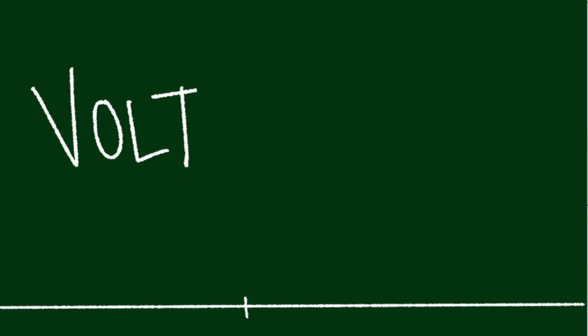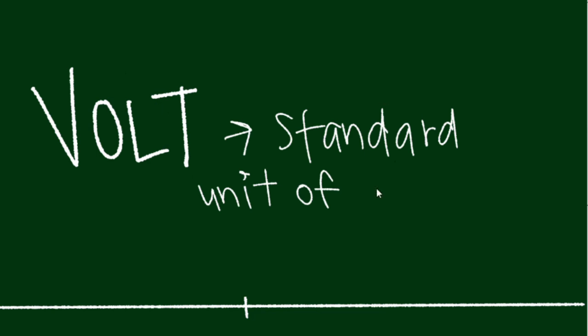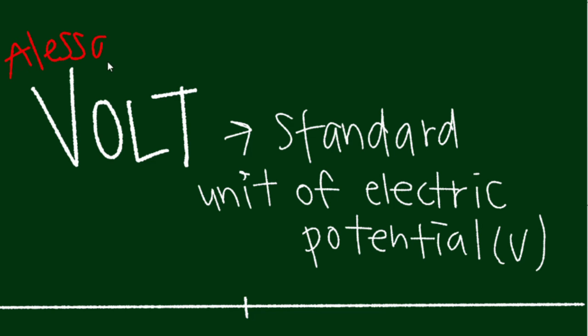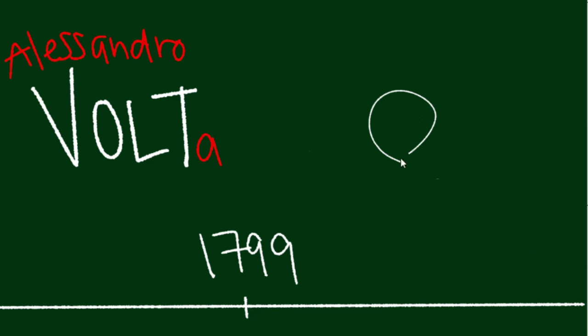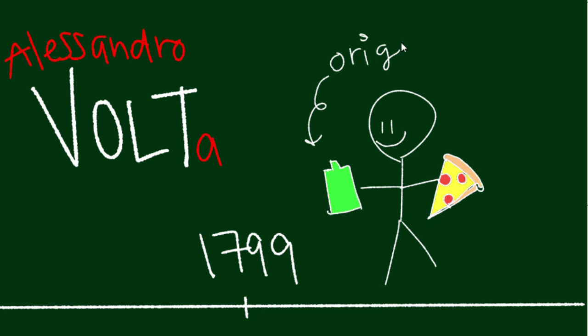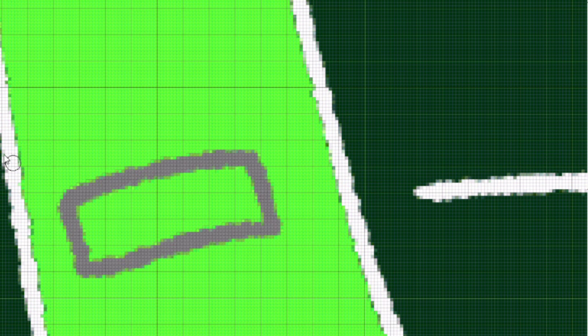You've probably heard of the term volt, used today as our standard unit of electric potential. It comes from the name of an Italian scientist, Alessandro Volta, who in 1799 created the first battery. His invention, now called the voltaic cell,